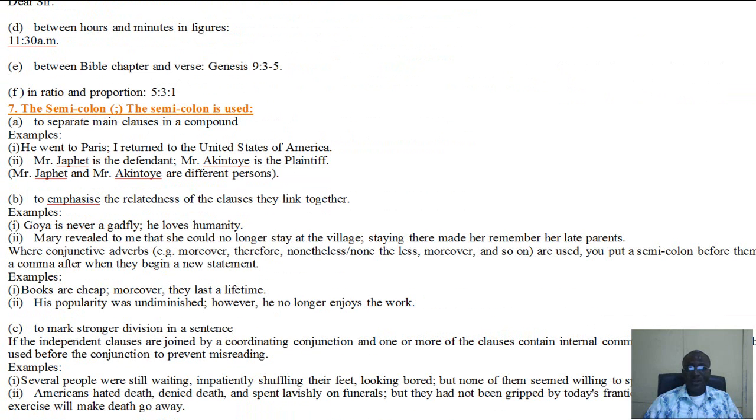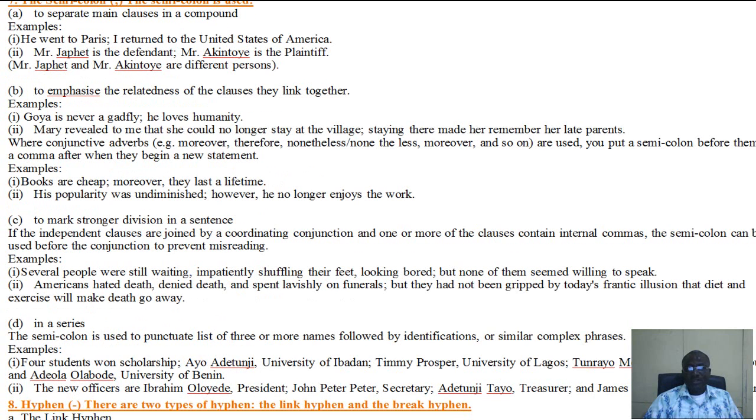The semicolon is used to separate main clauses in a compound. An example: He went to Paris; I returned to the United States of America. The semicolon can also be used to emphasize the relatedness of the clauses they link together. An example: Mary revealed to me that she could no longer stay at the village; staying there made her remember her late parents. So here we have the relatedness of these two clauses. Why would Mary not stay in the village again? Because staying in the village made her remember her late parents.